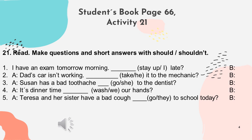So as you can see, first we write the word 'should,' then the subject — I, he, she, we, etc. — and then the action or the verb, and then the answer can be positive or negative. Please try to answer numbers three, four, and five.